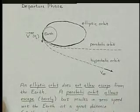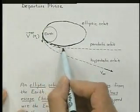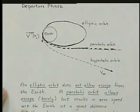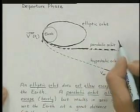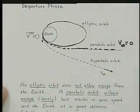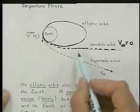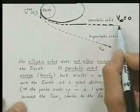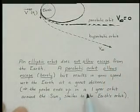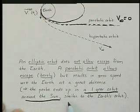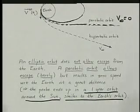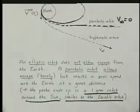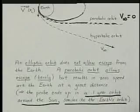A parabolic orbit allows escape but results in a zero speed with respect to the Earth. In other words, V infinity is zero. So you get away from the Earth and you end up, when you're at a great distance from the Earth, at a relative speed to the Earth of zero, which means that in this orbit, the probe would end up in a one-year orbit period around the Sun, similar to the Earth's orbit. We could be in an inclined orbit, in a slightly elliptic orbit, but we'd have the same period as the Earth when we escape with a V infinity of zero. So that does not get you to Mars.